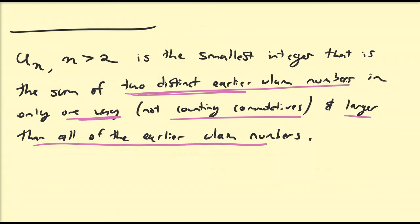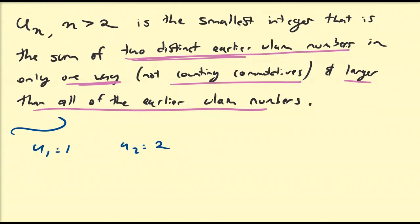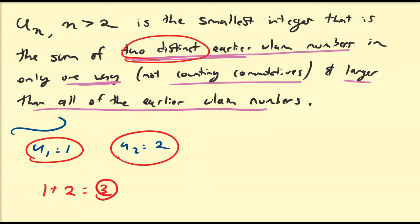So let's see if we can generate the third Ulam number. So we have U1 is equal to 1 and U2 is equal to 2. So the only possible sums here is the sum of this one and that one. So 1 plus 2 is equal to 3 is the only possible sum that can be generated from these two Ulam numbers. And again, we have to do distinct earlier numbers. So we can't do 1 plus 1 and 2 plus 2. So that means by default, U3 is going to be equal to 3.